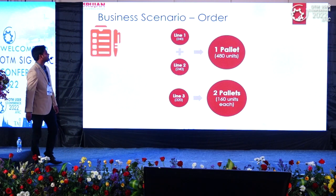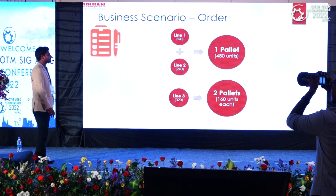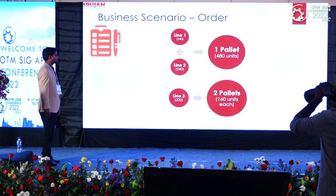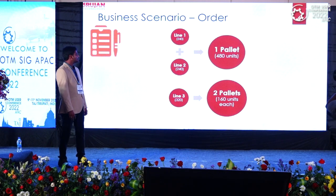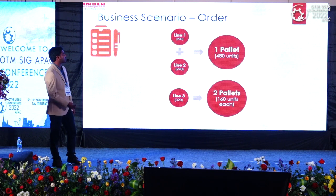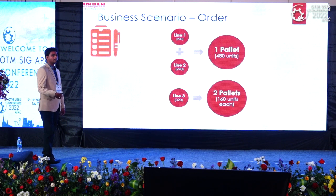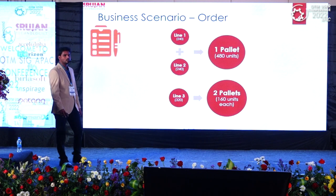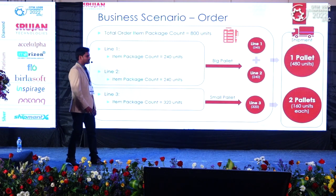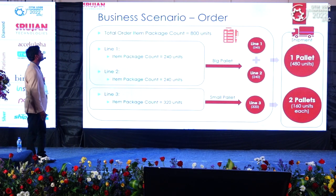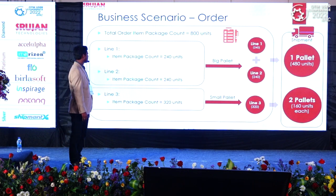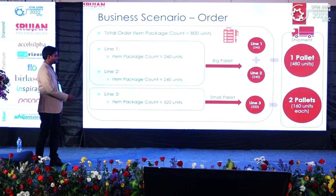In the simple scenario, we have a single order with three lines. The first two lines share the same big pallet configuration — a half pallet and half pallet making one big pallet total. Line 3 has 320 units, which equals two small pallets. The system should automatically calculate two pallets. The total order count is 800 units, and we can see how to solve this at the technical level.